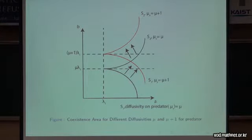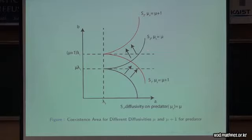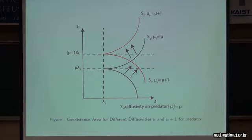So if the diffusivity of the predator is going up, then the co-existence area is also going up. You could see that the curve S1 is going up, and S2 is also going up. So it is hard to analyze how the co-existence area changes, or how the existence area for prey or predator changes, with the diffusivity of the predator.